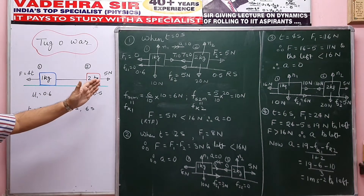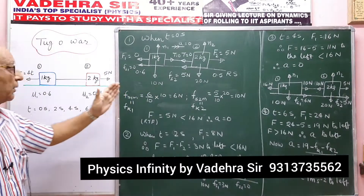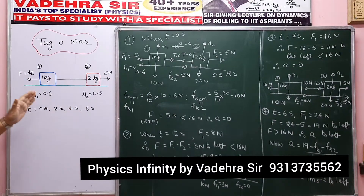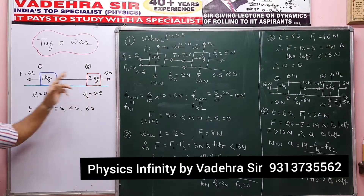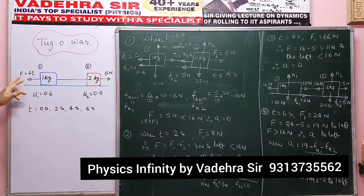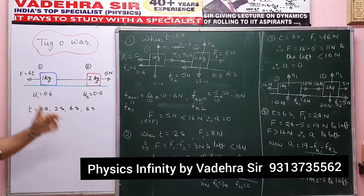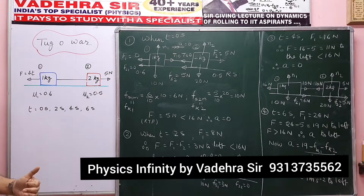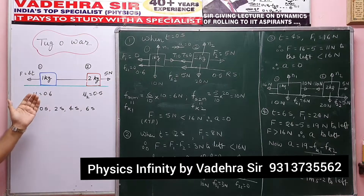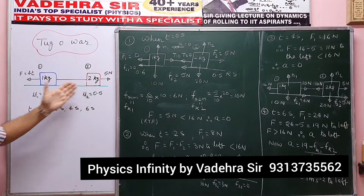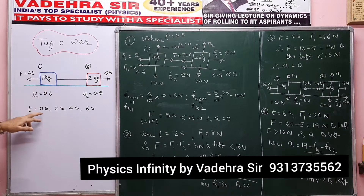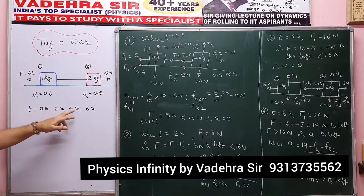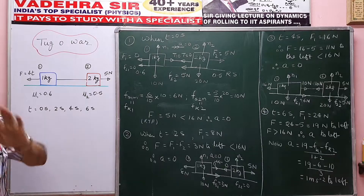I am applying a force of 5 Newton to the right on block number 2, and a force that is a function of time — it will vary with time — given as 4T on block number 1. I am asking you to find the tension in the rope and the friction between the block and the surface when time is 0 seconds, 2 seconds, 4 seconds, and 6 seconds. So it will take 4 cases.